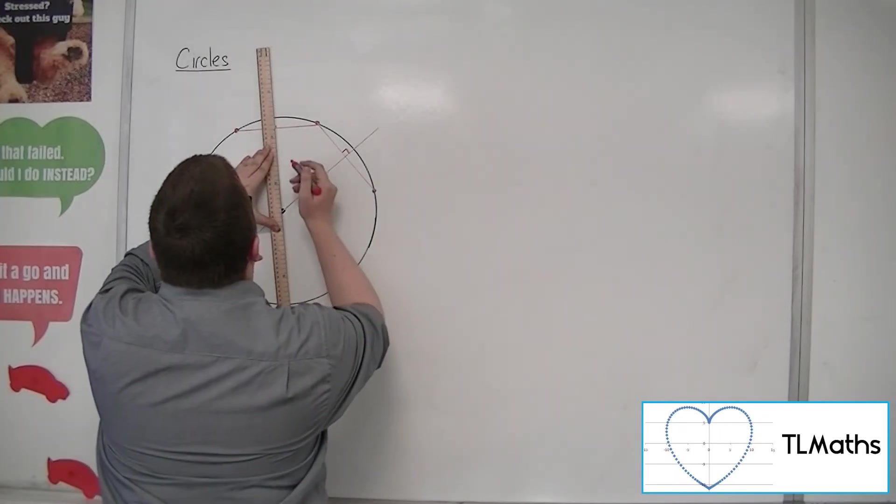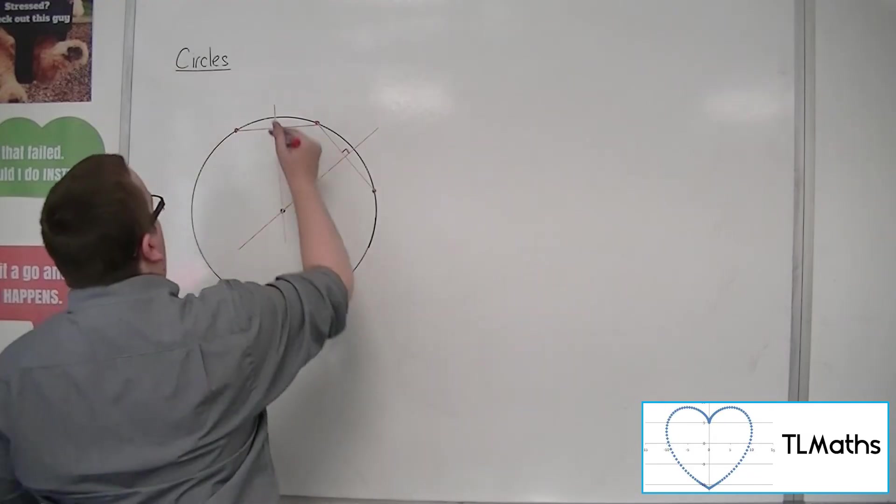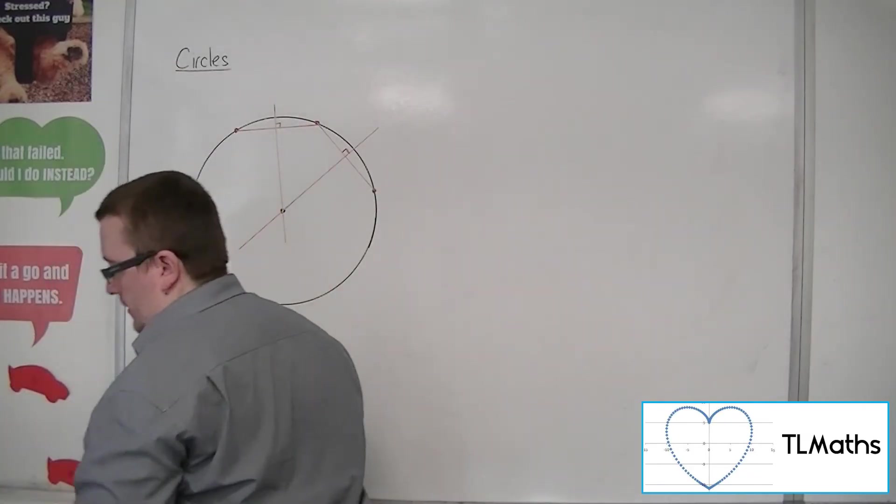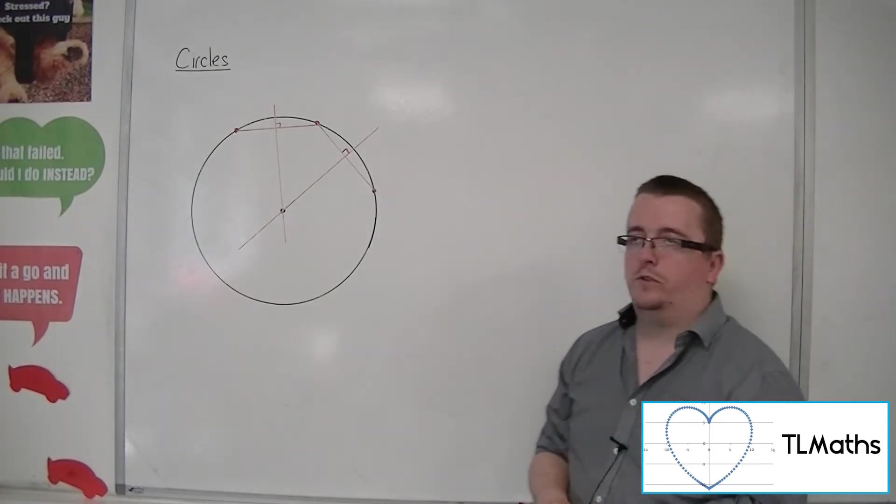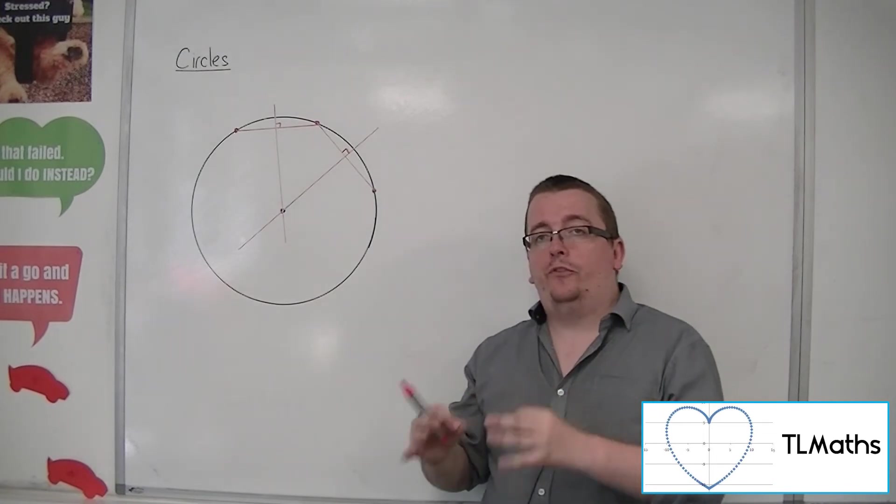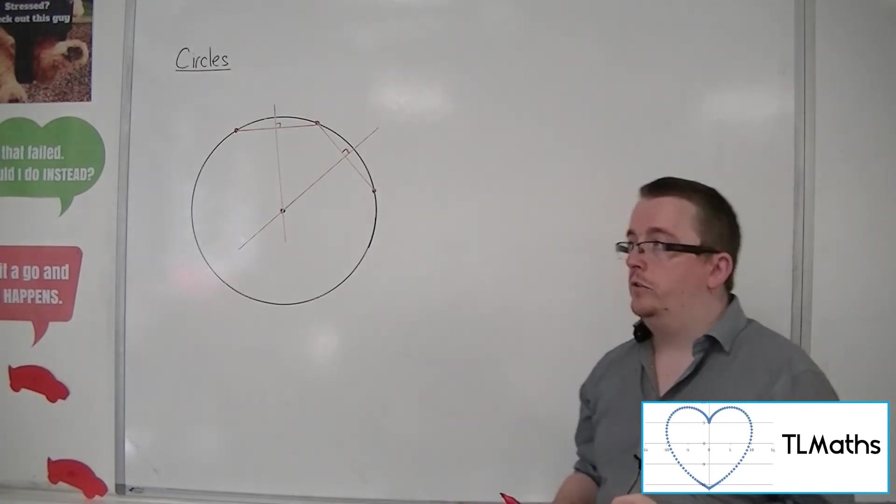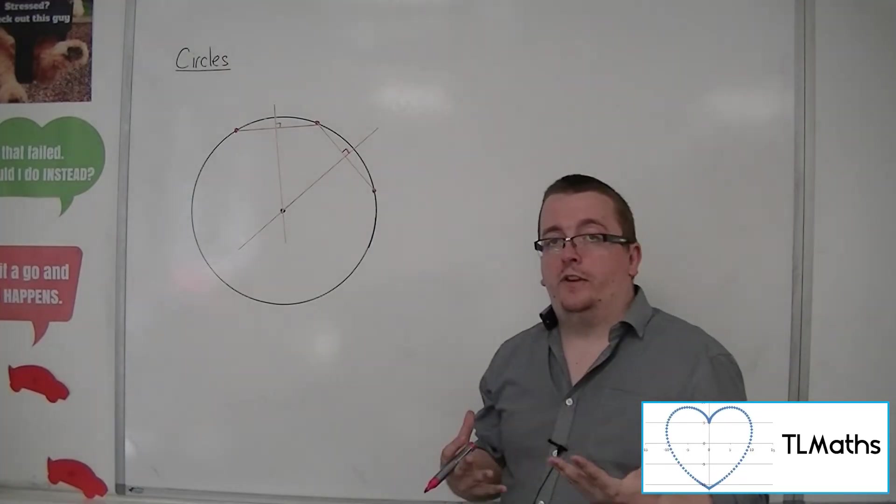then I actually get two lines that will intersect at the centre of the circle. So if you have three points that are on the outside, on the circumference of a circle, and you don't know the centre of that circle,